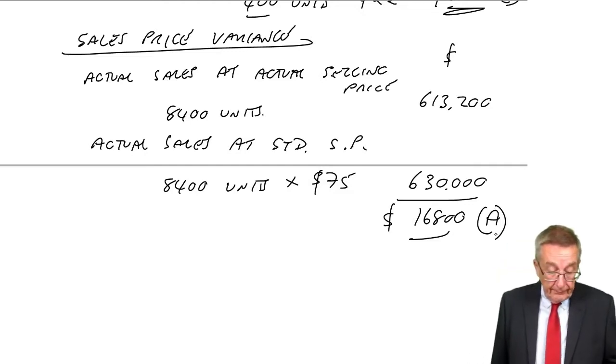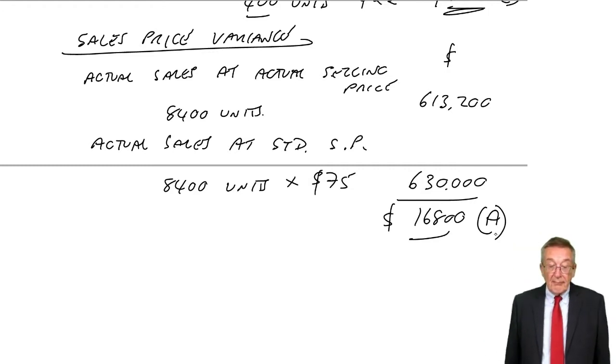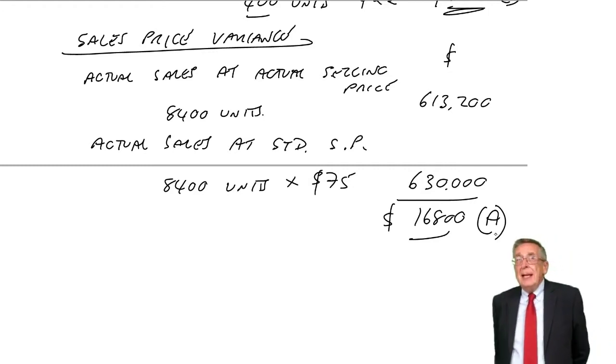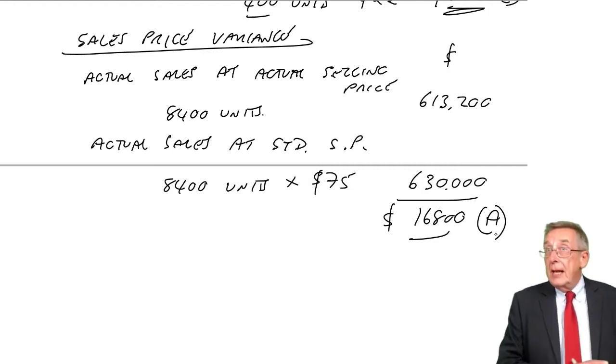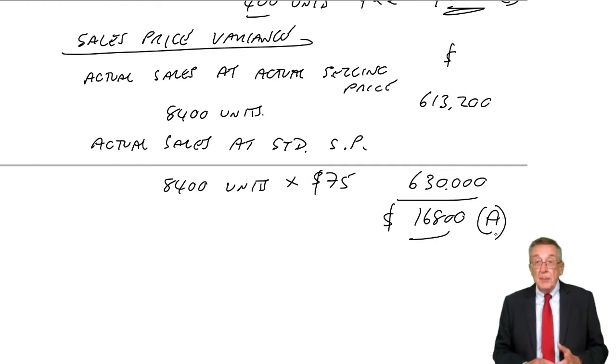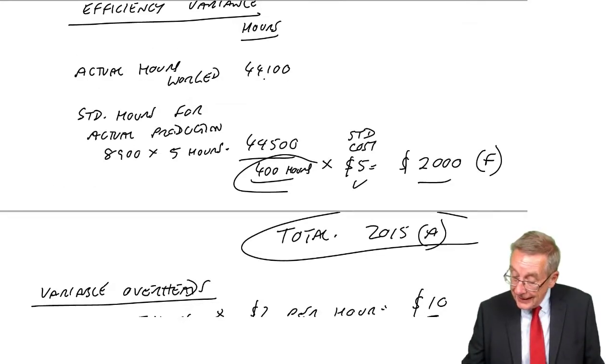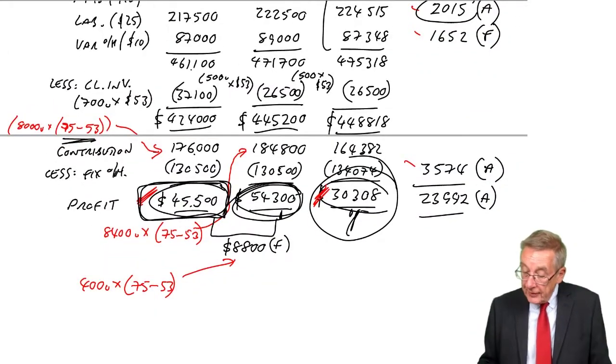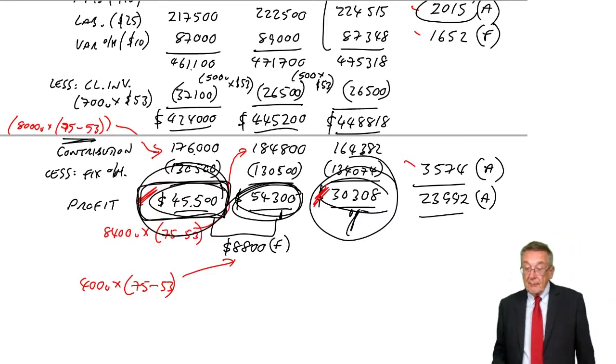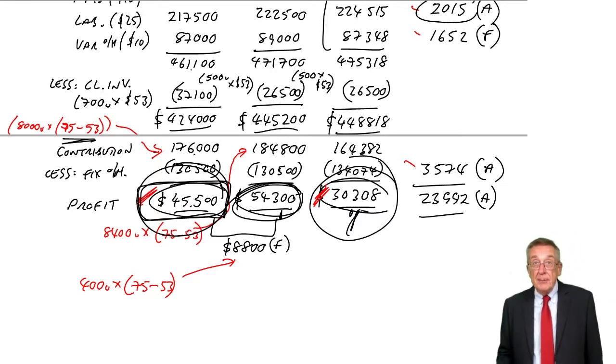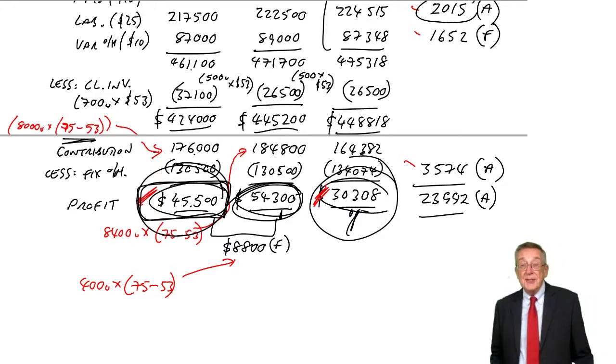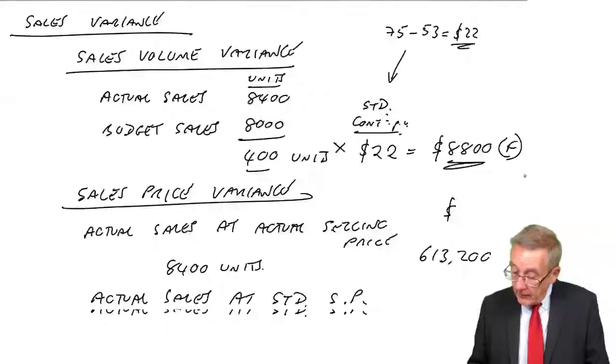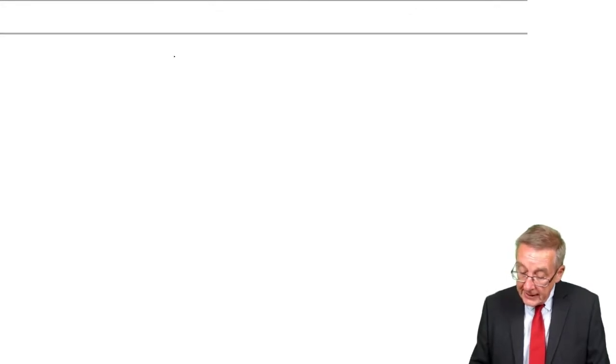All right, now we're, well, we've done the example through the sales variances. Let's, virtually finally, let's produce an operating statement. Again, I referred to this in the lectures on the previous chapter, but let's prepare a statement explaining to management why the actual profit is different from the budgeted profit.